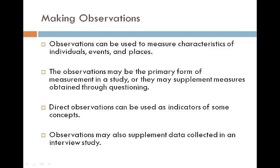Observations can be used to measure characteristics of individuals, events, and places. The observation may be the primary form of measurement in a study, or they may supplement measures obtained through questioning. Direct observations can be used as indicators of some concepts, and observations may also supplement data collected in an interview study.